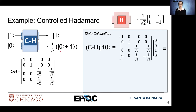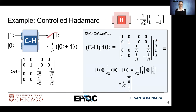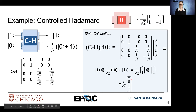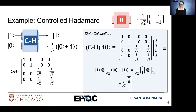Let's validate that with a matrix multiplication. We have our matrix for our operation, then we multiply that by our vector representing ket-10. If we take our predicted results — ket-1 tensor one over square root of two times ket-0 plus ket-1 — we can write that in bra-ket notation, write it in vector notation, take the tensor product, and we get our final result. That is what we anticipate whenever we do our matrix multiplication, so what we predicted as our output matches the result of our matrix-vector multiplication for our final state.